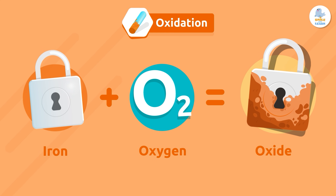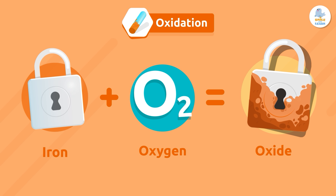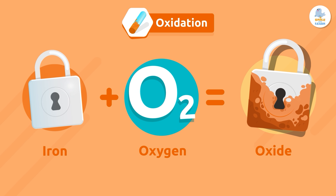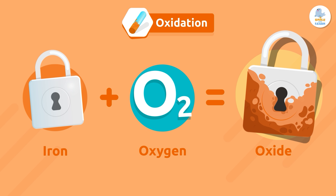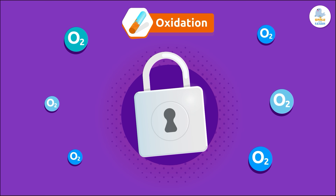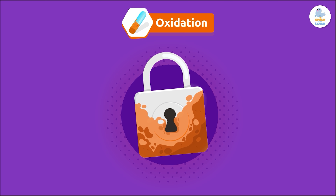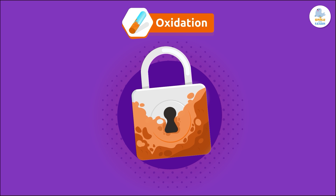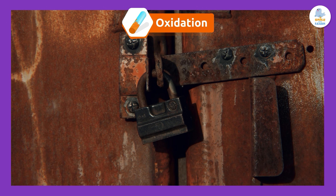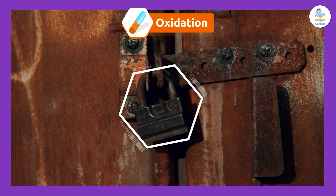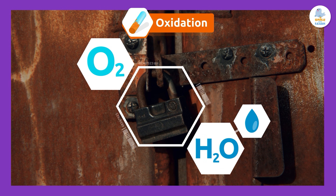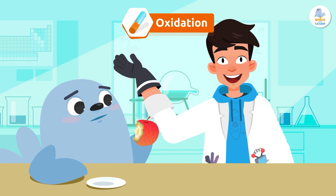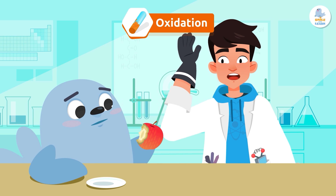Oxidation is a chemical reaction that occurs when a substance combines with oxygen and transforms into a new substance called an oxide. For example, when the iron in a lock comes into contact with oxygen for a long time, it oxidizes and turns into iron oxide. The most common type of oxidation is what happens to something when it's in contact with air or water for a long time — but it can also happen to food that we leave out in the open, like your apple, Smiley.